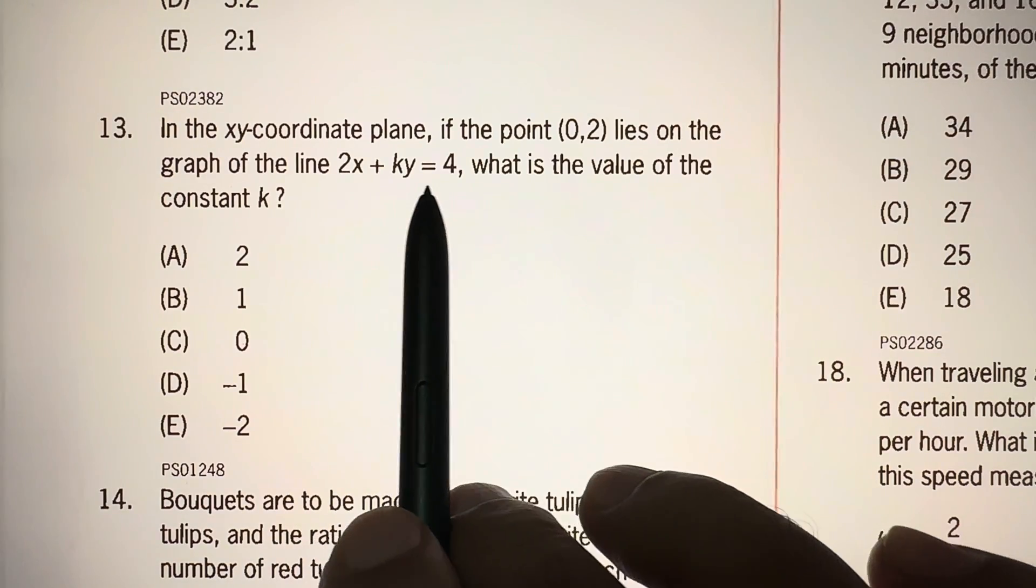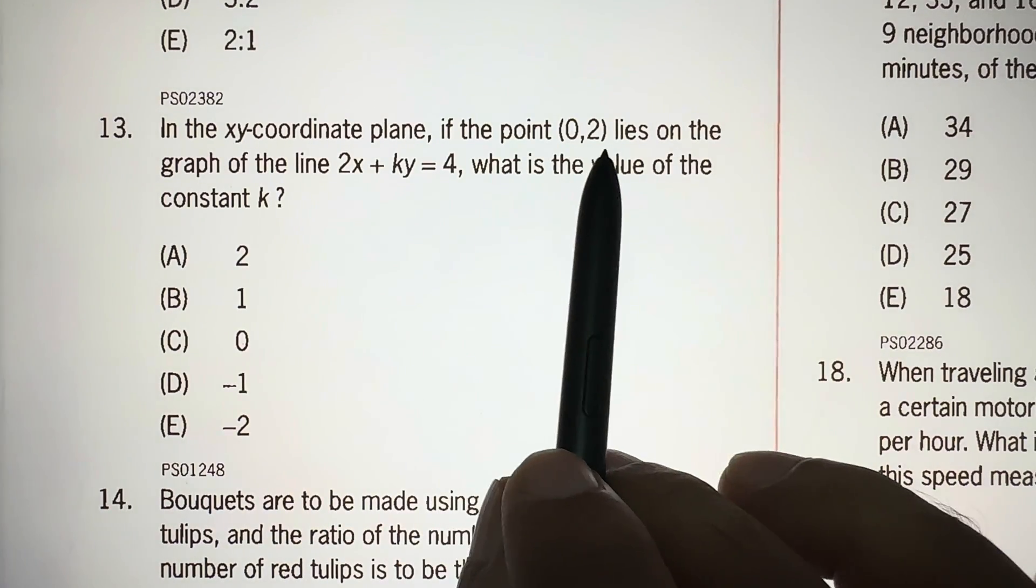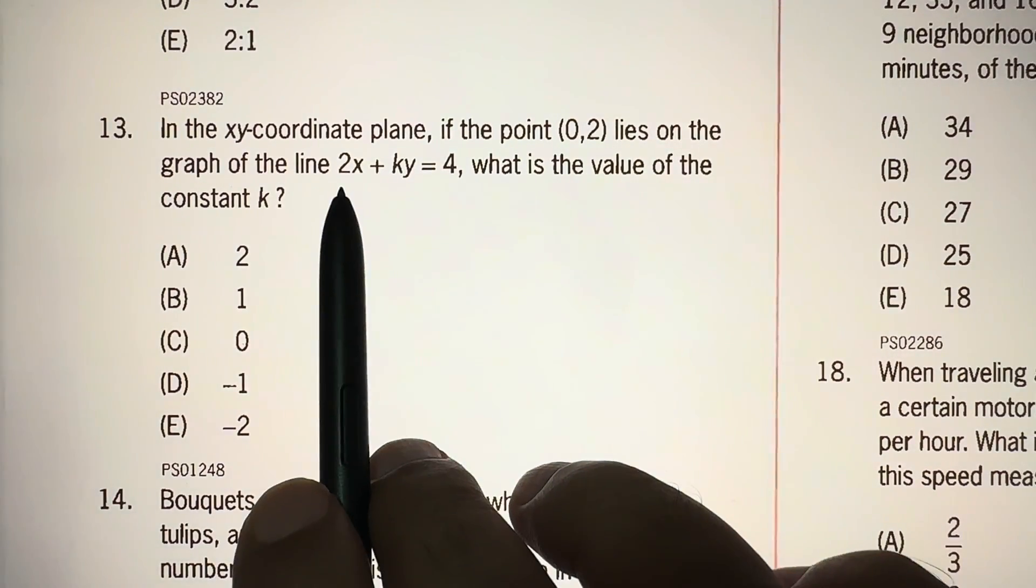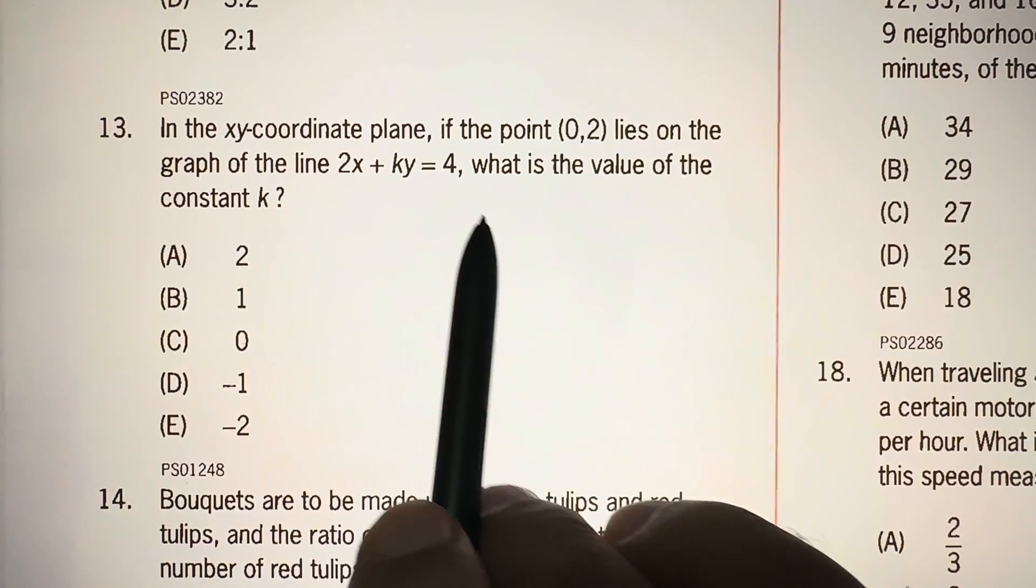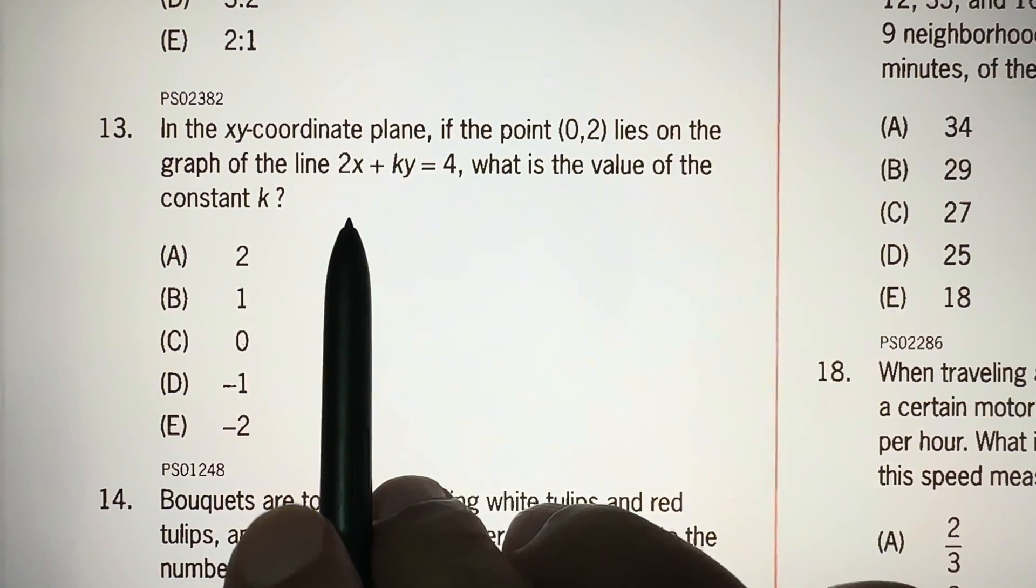In the xy coordinate plane, if the point (0,2) lies on the graph of the line 2x plus ky is equal to 4, what is the value of the constant k?